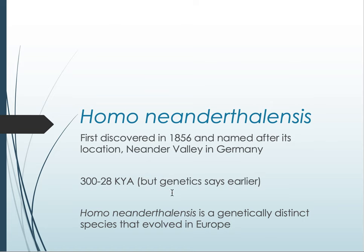Neanderthal samples range from 300,000 to 28,000 years ago, but much like heidelbergensis, genetics and molecular evidence suggest that Homo neanderthalensis probably evolved much earlier — maybe as early as 700,000 years ago. This is a genetically distinct species that evolved in Europe, and as Homo sapiens we have on average about 2.5% of their DNA, which suggests we mated with them successfully at least a few times in human history.